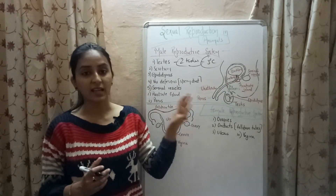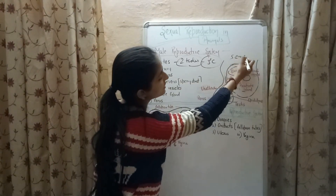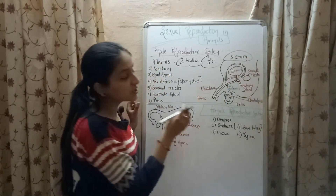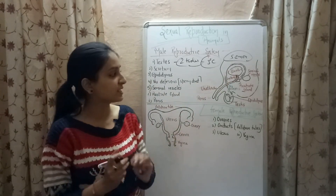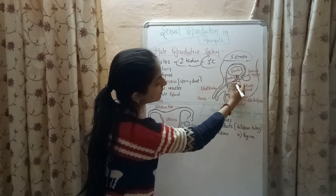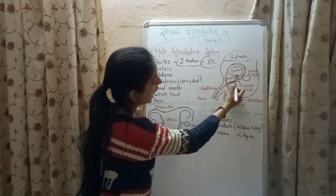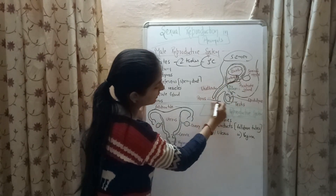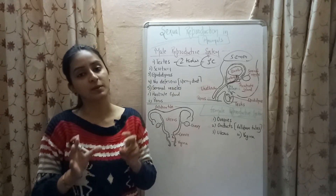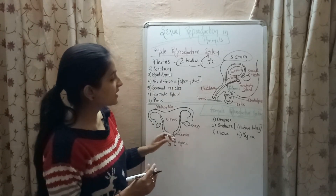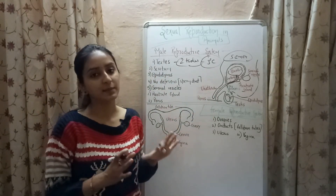The secretions produced by these two glands provide lubrication and a passage for the sperms to move inside the tube. These secretions are liquid in nature and are known as semen. The function of semen is to allow easy transport of the sperms inside the vas deferens. The urine and sperms present in the urethra are passed on to the penis, and it is from the penis that the sperms are ejected out from the body of the male organism.